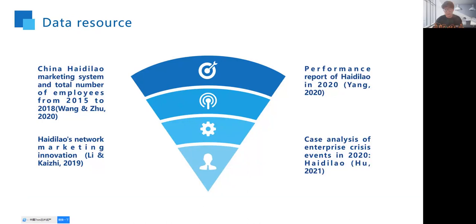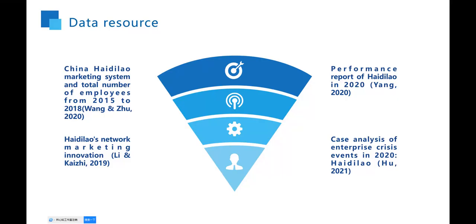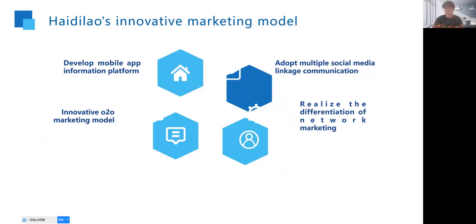Research data and data sources are as follows: China Haidilao marketing system and total number of employees from 2015 to 2018; performance reports of Haidilao in 2020; Haidilao's network marketing innovation; and Haidilao case analysis of enterprise crisis events in 2020. Specifically, Haidilao's innovative marketing models include: developing a mobile app information platform, adopting multiple social media linkage communication, an innovative O2O marketing model, and realizing the differentiation of network marketing. I will explain these four innovative marketing models one by one.